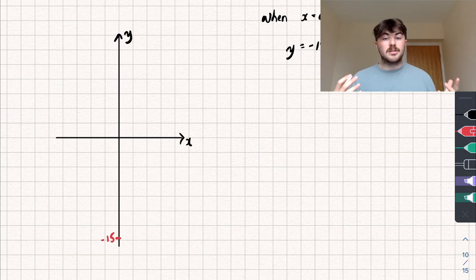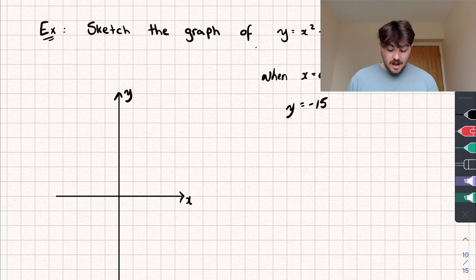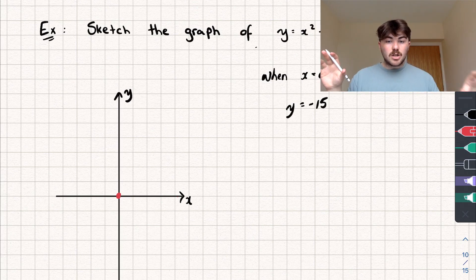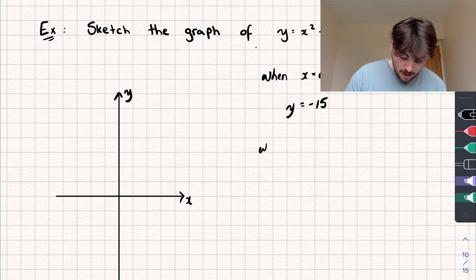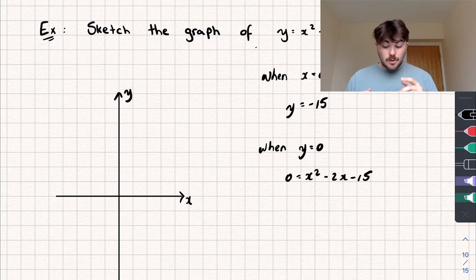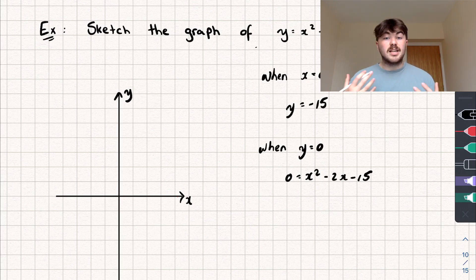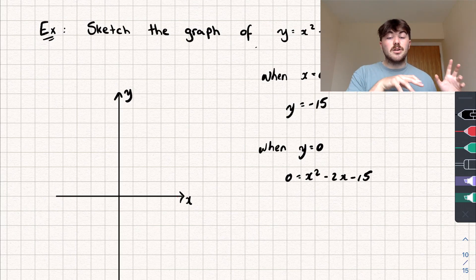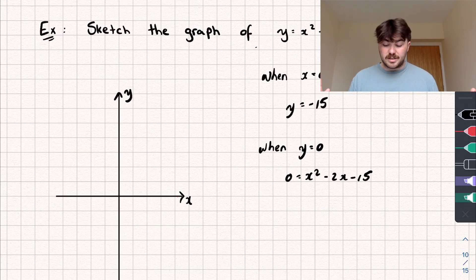Another key piece of information is where the graph intersects with the x-axis — finding the roots of this quadratic. That's going to be when y equals zero. So we have 0 equals x squared minus 2x minus 15, and we need to solve this quadratic. We could use completing the square, factorising, or the quadratic formula — for this one I'm just going to factorise it.